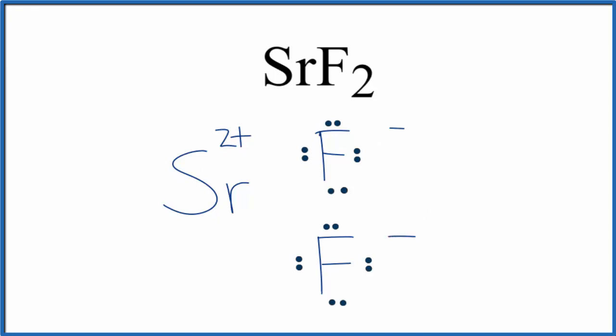Often we'll put brackets around the nonmetal that received the electrons, and then have that negative charge on the outside. Often you'll see the brackets around the positive ion too as well. Either way is okay.